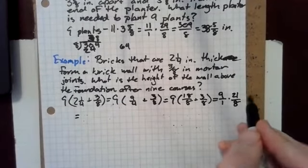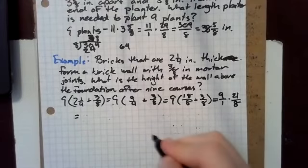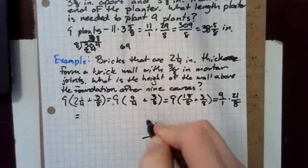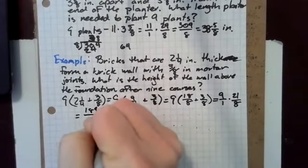So that's nine times 21. That's 189 over eight.